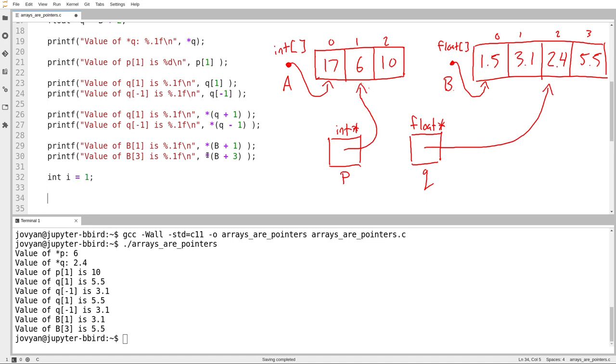Let's create a variable i for the sake of knowing the types of everything we're working with. Int i equals 1. Okay, so I'm going to say this. Value of A sub i is, and then I'm going to print out the result of subscripting A with i.